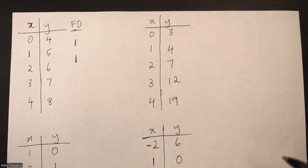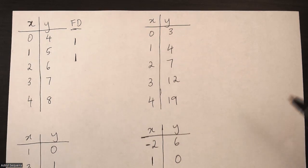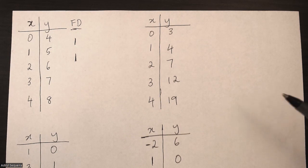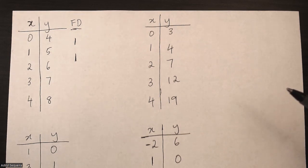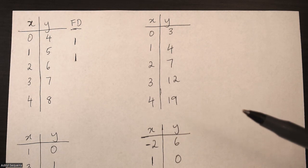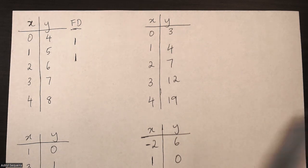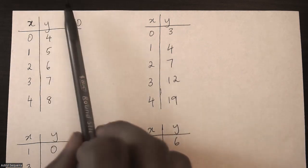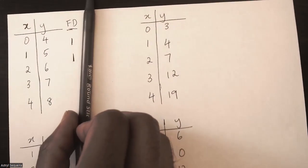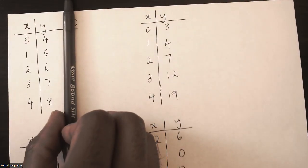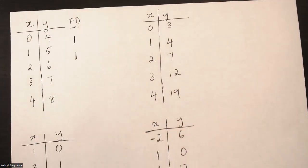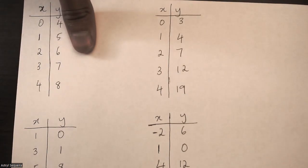In this video I want to find the finite differences of these tables of values and then use the finite differences to determine whether each relation is either quadratic, linear, or neither. You can ignore those first differences right there — I accidentally started the problem, so that doesn't exist.